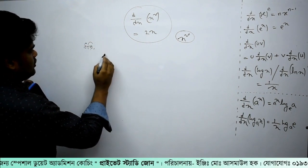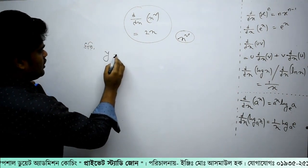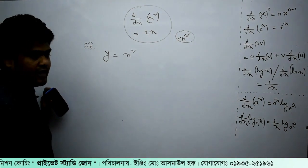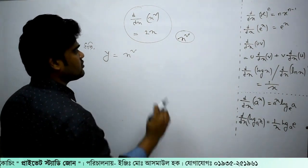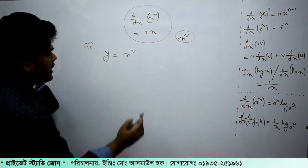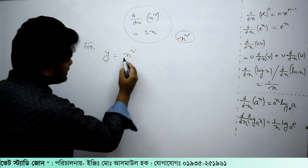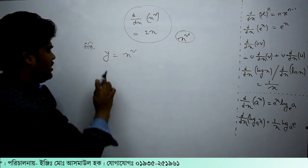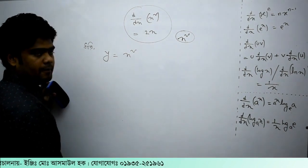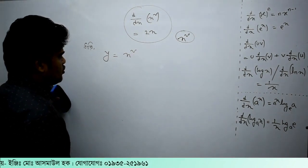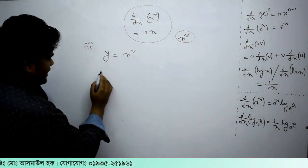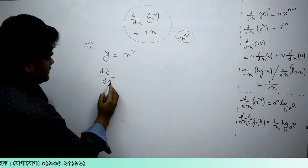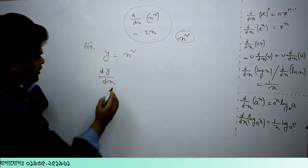y equals x squared. If I want to say x squared, I will say y equals x squared. And I will say dy by dx.